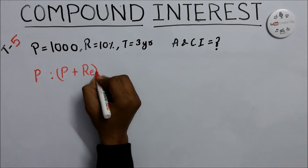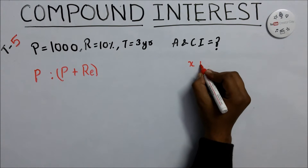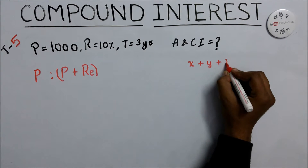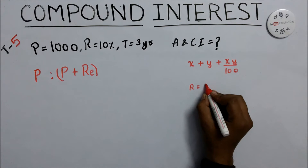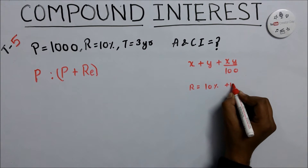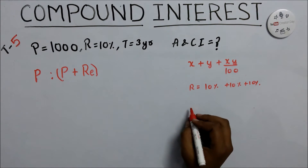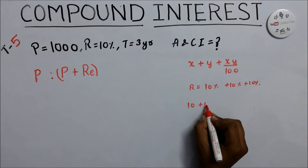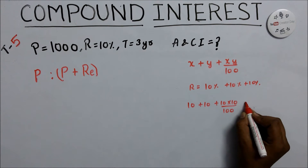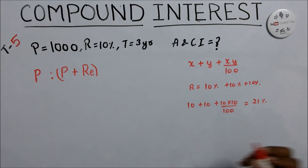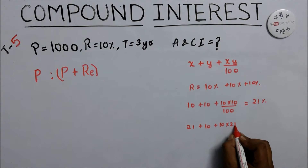We calculate the rate of interest for three years using the formula: x plus y plus (x times y) divided by 100. First, for 10% and 10%: 10 plus 10 plus (10 times 10) divided by 100 equals 21%. Then apply again: 21 plus 10 plus (21 times 10) divided by 100.